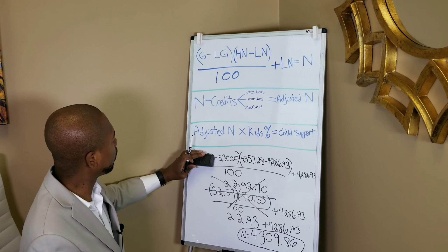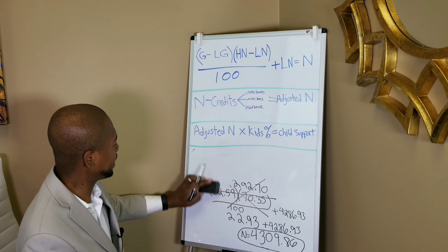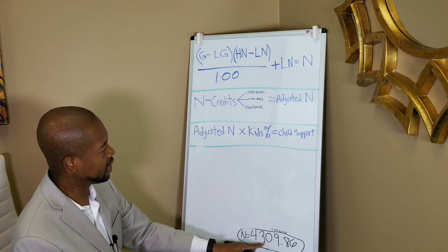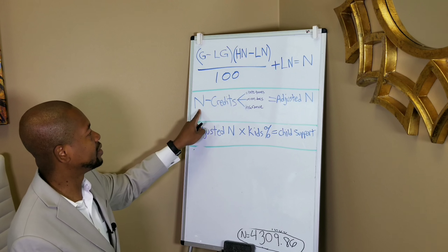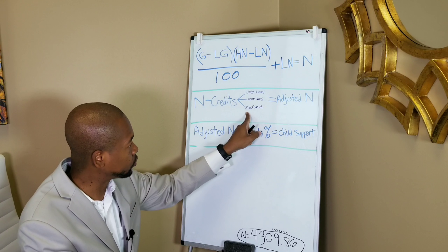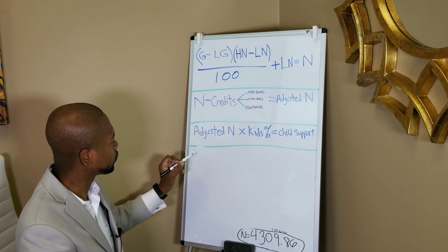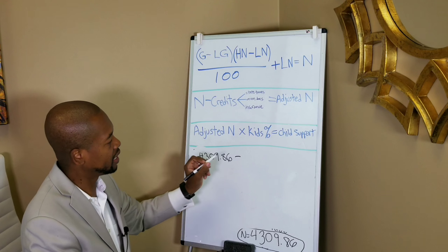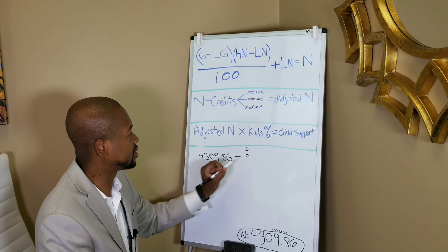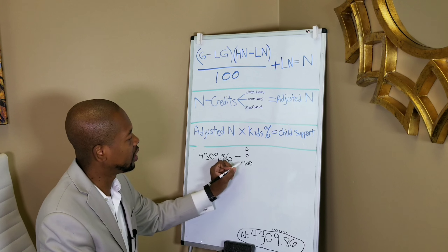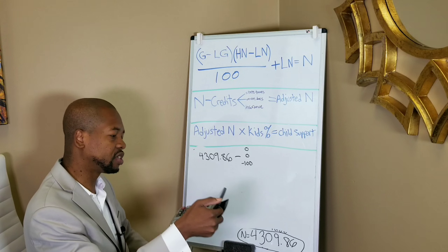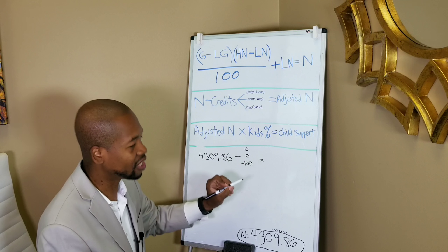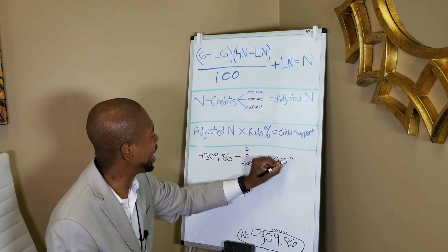Now that we have our monthly net income, we take that number and deduct the credits the obligor is entitled to — state taxes, union dues, and medical insurance. So from $4,309.86, union dues is nothing, state taxes is nothing, and he pays $100 per month in insurance costs for the child. We deduct $100 to get an adjusted net income of $4,209.86.